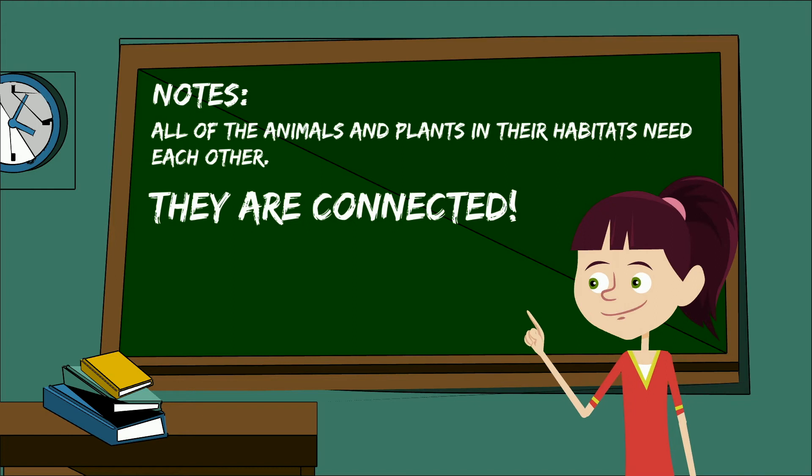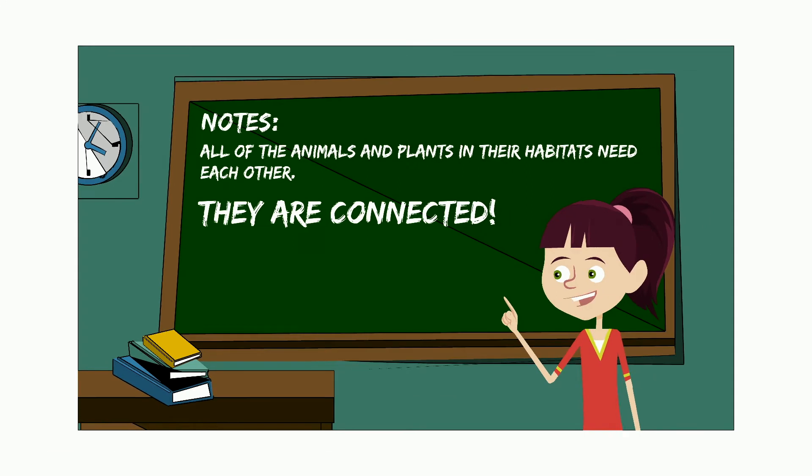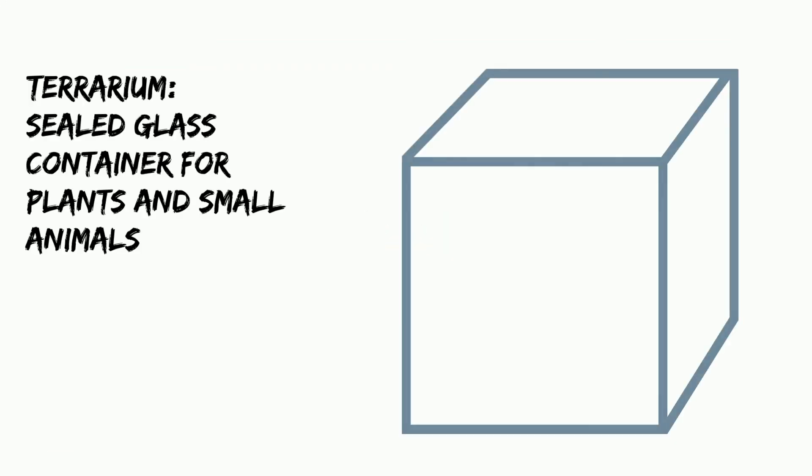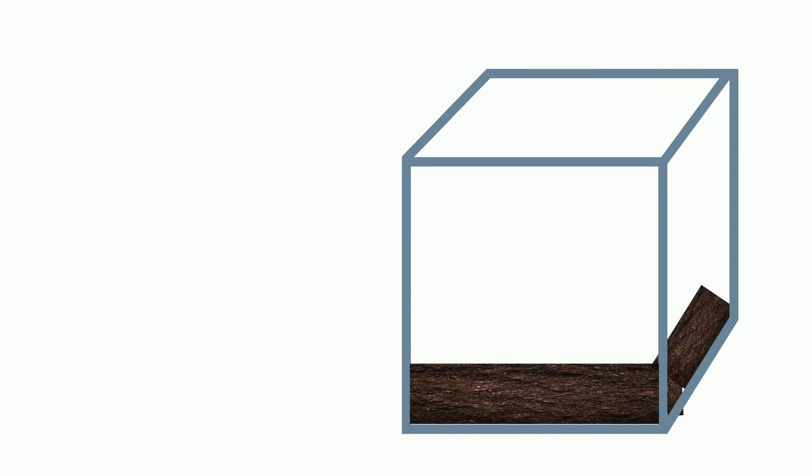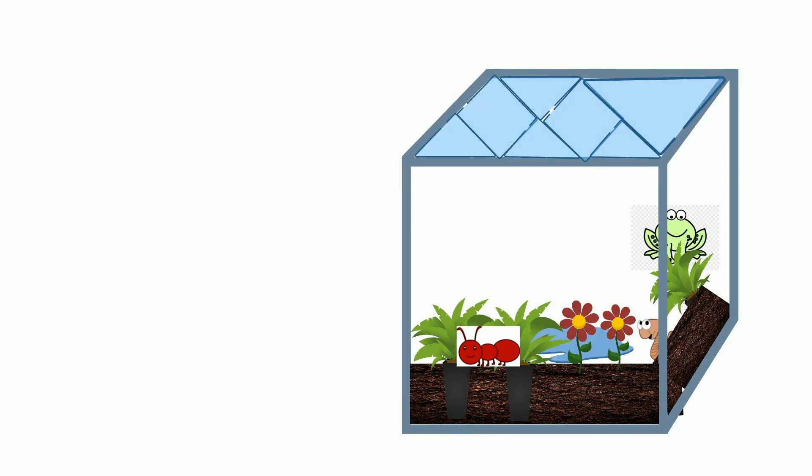Let's paint a picture. Imagine you're creating a terrarium, which is a sealed glass container for plants and small animals. In this container, you put soil, plants, and small animals, such as worms, ants, and frogs. You also put water and close the container with, of course, air in it, so the plants and animals can breathe.